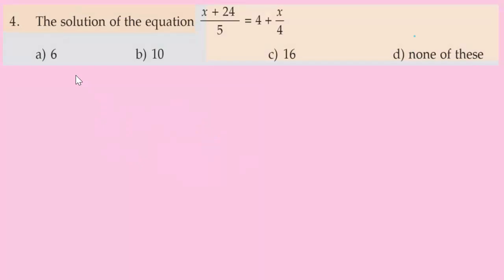Question number 4: the solution of the equation (x+24)/5 = 4 + x/4. The four options are 6, 10, 16, and none of these. Let's write the equation: (x+24)/5 = (x+4)/4.